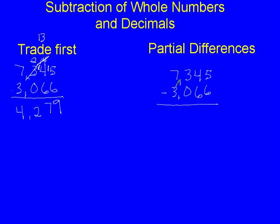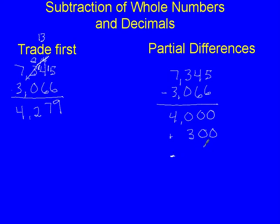The first thing we're going to subtract is the thousands place: 7,000 minus 3,000 is 4,000. Now we go to the hundreds place: 300 minus 0 hundreds is positive 300, so we put a plus sign next to this. Now the tens place — there's no trading with this, we just look at the digits as they are. 4 tens minus 6 tens gives us a negative number: negative 20. Then in the ones place, 5 subtract 6 gives us negative 1.